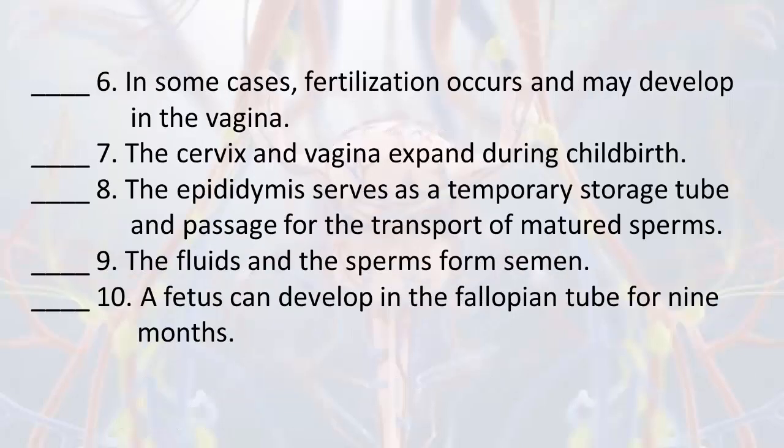6. In some cases, fertilization occurs and may develop in the vagina. 7. The cervix and vagina expand during childbirth. 8. The epididymis serves as a temporary storage tube and passage for the transport of matured sperms. 9. The fluids in the sperms form semen. 10. A fetus can develop in the fallopian tube for 9 months.